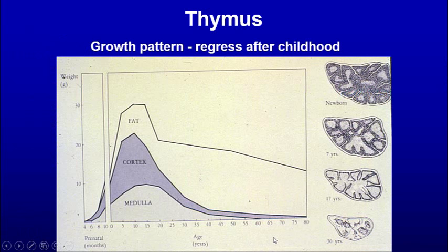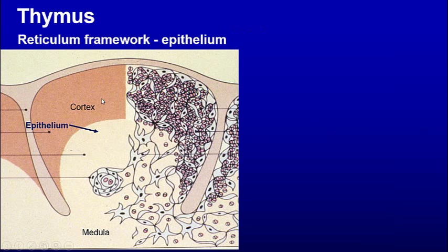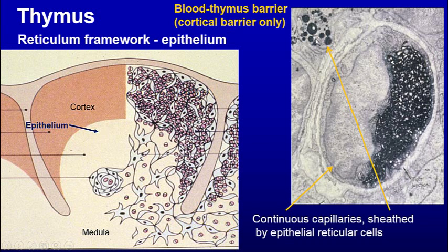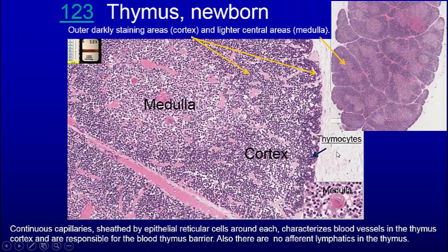We see the growth phase at different ages. The cortex starts to regress at about 10 years of age, and the thymus is composed of different lobes with cortex and medulla. We have epithelium — these are the epithelial cells — which ultimately make the Hassall's corpuscles in the medulla. So you see these epithelial reticulum cells in the cortex and medulla, and those reticulum cells are part of the blood-thymus barrier.